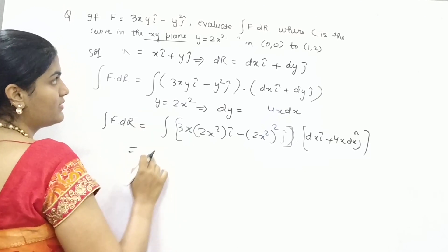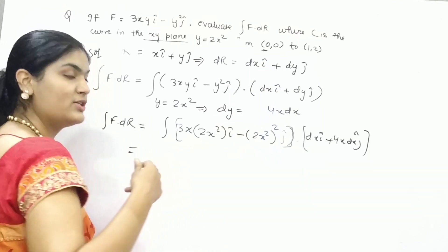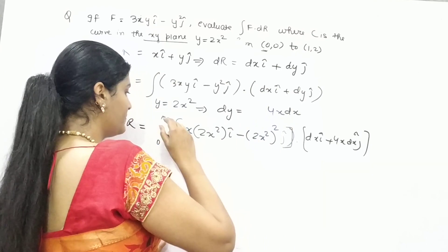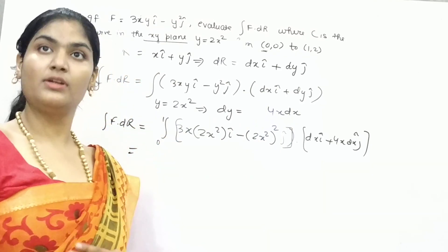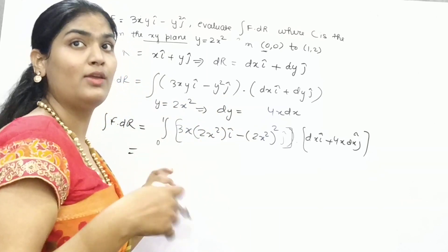If you find out the limits, you can see that this is going, if you are taking for x because you have converted everything into x, so consider x 0 to 1. If you would consider y, then you need to take 0 to 2.